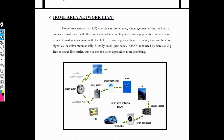Home area network is an important type of energy management system. It connects to all smart meters and intelligent electronic devices. Home area network technologies include Wi-Fi, Zigbee, and Bluetooth. This home area network is connected to other meters.